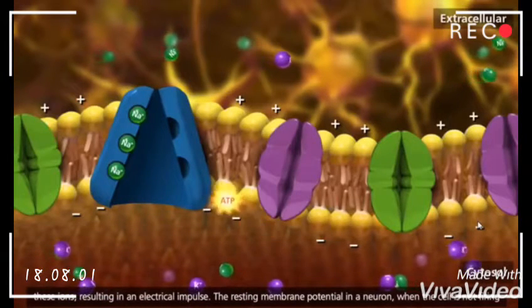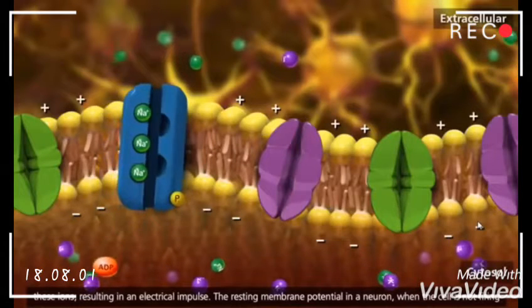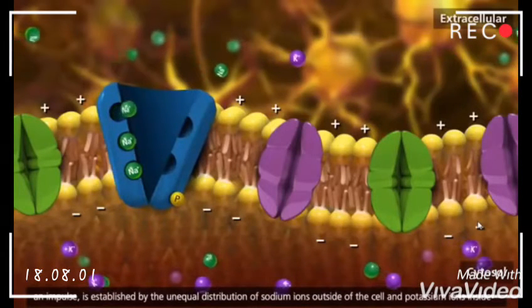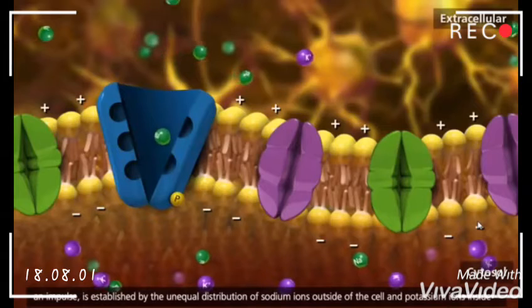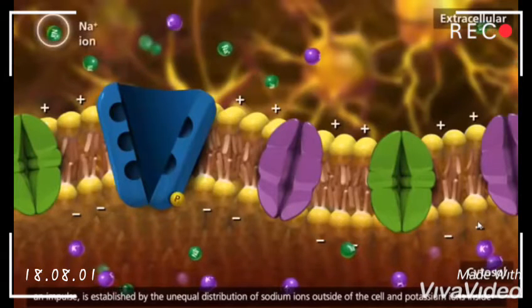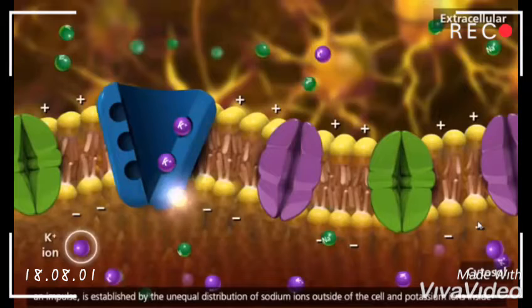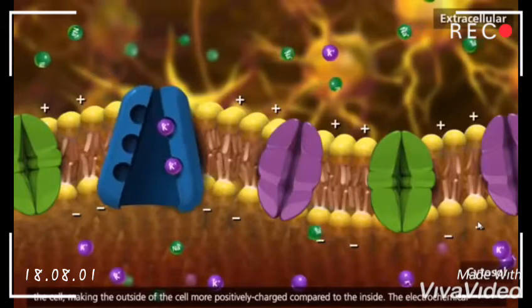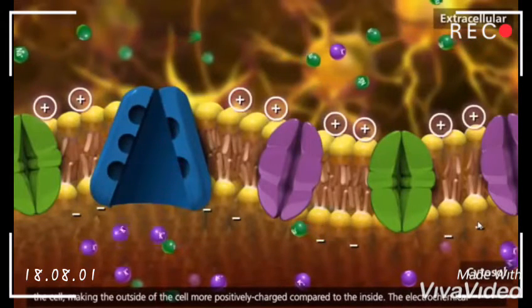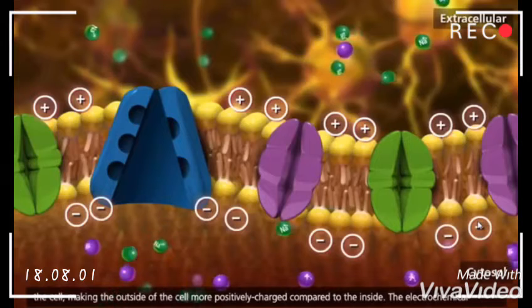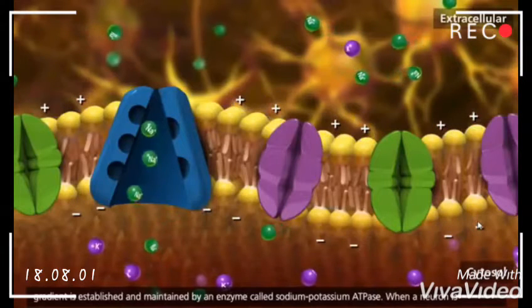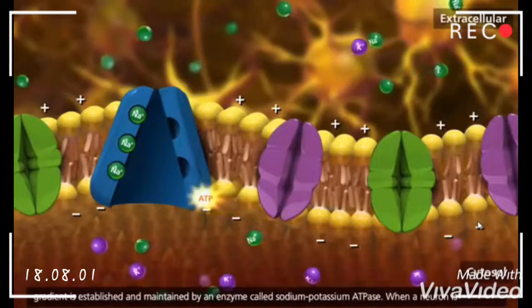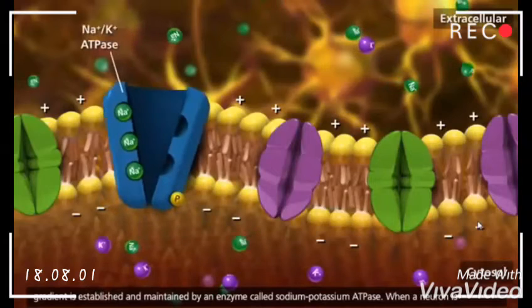The resting membrane potential in a neuron when the cell is not firing an impulse is established by the unequal distribution of sodium ions outside of the cell and potassium ions inside the cell, making the outside of the cell more positively charged compared to the inside. The electrochemical gradient is established and maintained by the enzyme called sodium-potassium ATPase.